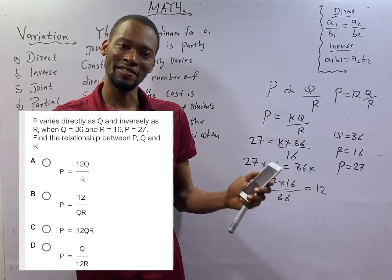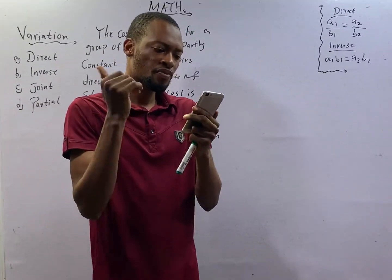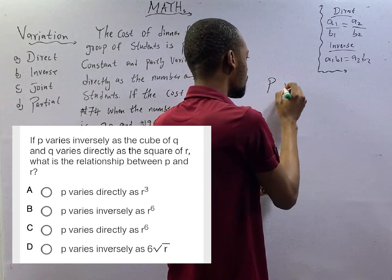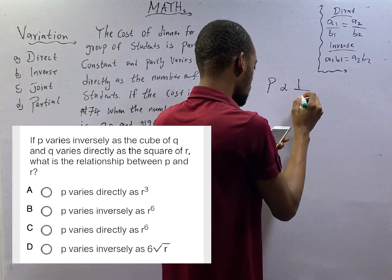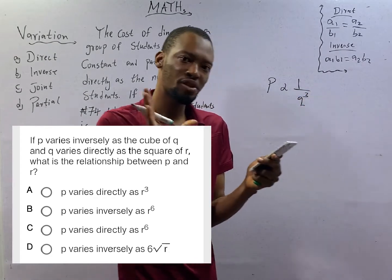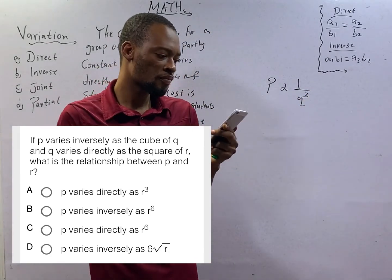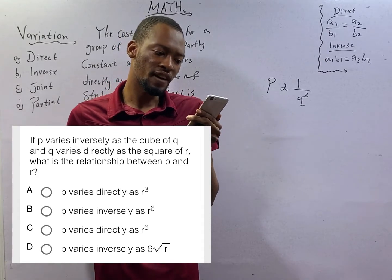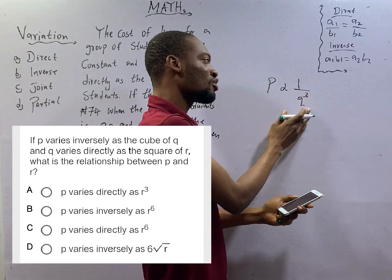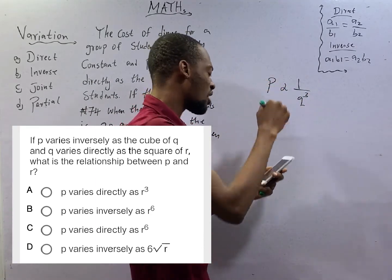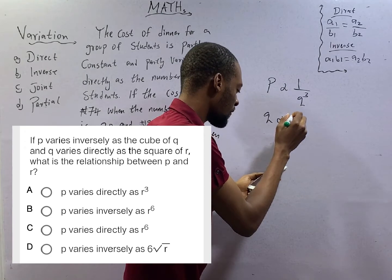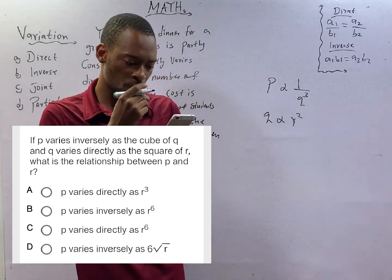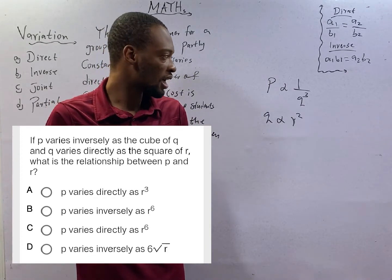If P varies inversely as the cube of Q, P varies inversely as the cube of Q. They did not say cube root, they said cube. And Q varies directly as the square of R. Square, not square root. What is the relationship between P and R?